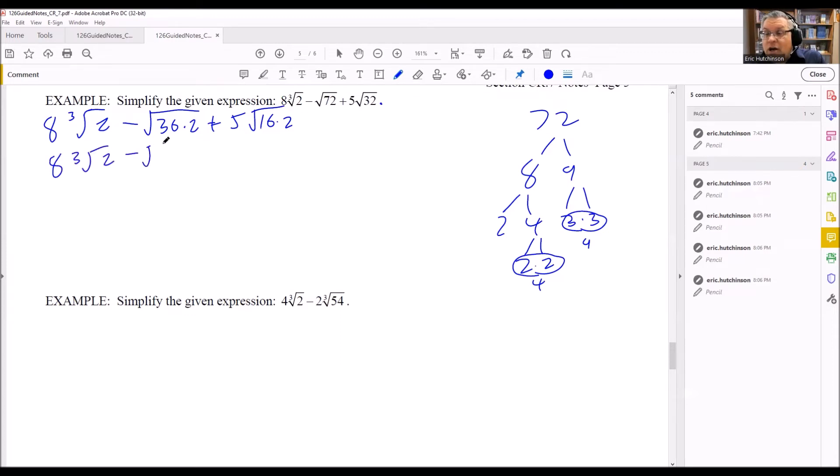Now that I have that, I'm going to use the product property to break these apart. I'm breaking all these apart so I can take the square root of these separately. So square root of 36 is 6, and square root of 16 is 4.